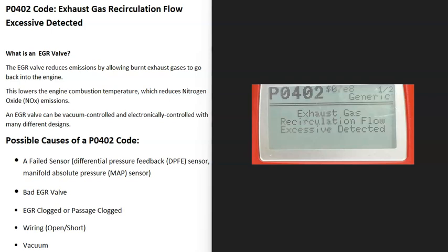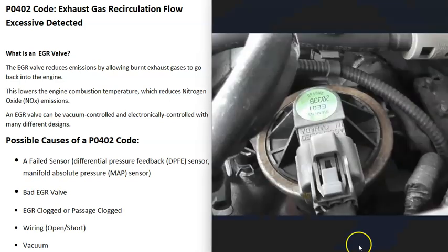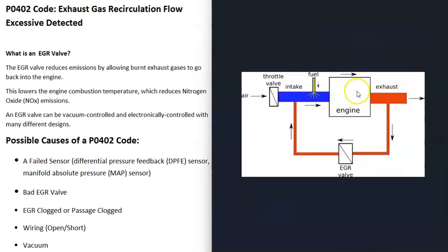Today I'm talking about a P0402 code — what it is and how you go about fixing it. The P0402 code stands for 'Exhaust Gas Recirculation Flow Excessive Detected.' Basically, engines have what's called an EGR valve, which is for emissions. The EGR valve feeds exhaust gases back into the intake manifold so those exhaust gases go back into the engine to be burnt off, helping to lower combustion temperature.